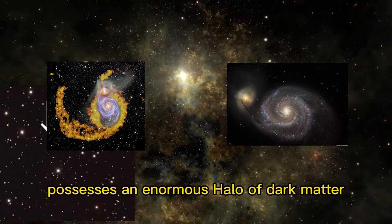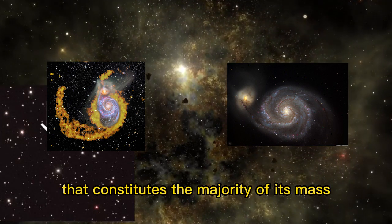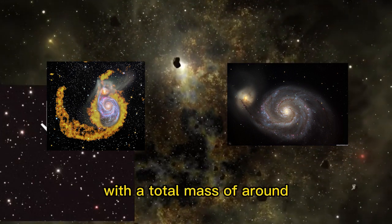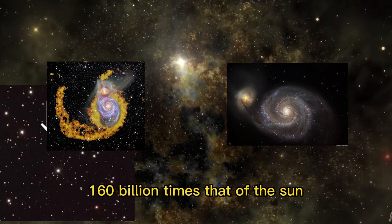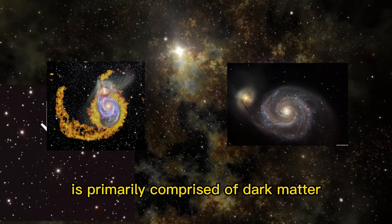Scientists believe that this galaxy possesses an enormous halo of dark matter that constitutes the majority of its mass, though not visible. With a total mass of around 160 billion times that of the Sun, the Whirlpool Galaxy is primarily comprised of dark matter.